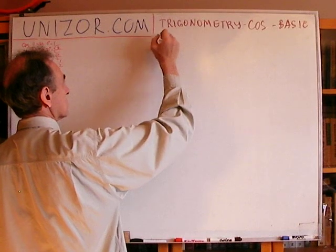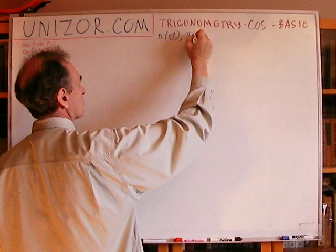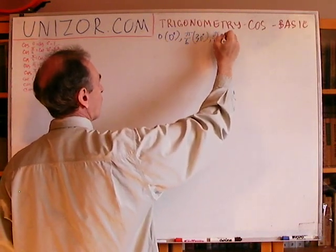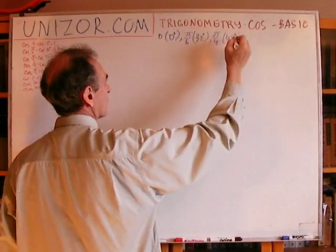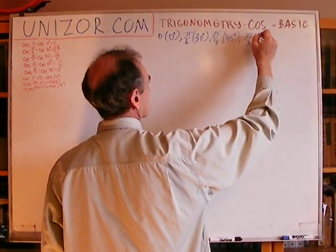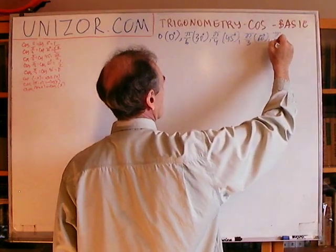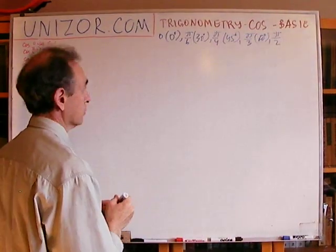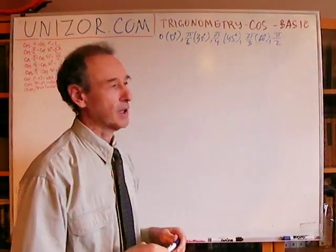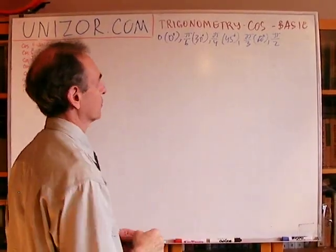Well, it's zero radians, which is zero degrees. It's π over 6 radians, which is 30 degrees. It's π over 4, which is 45 degrees. It's π over 3, 60 degrees, and π over 2. Sometimes I'm saying P, sometimes pi, depending on which language I have in mind, Greek or Latin or English, whatever.